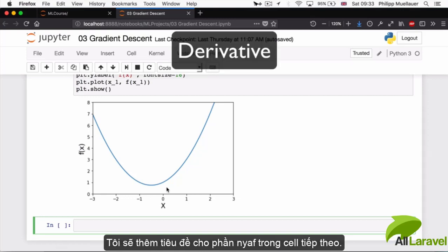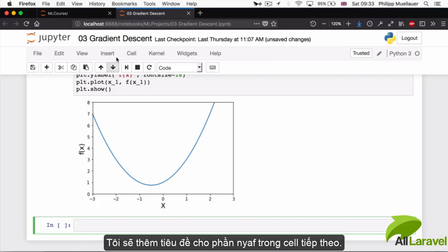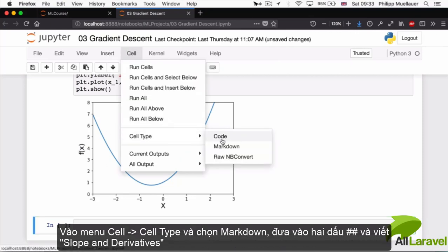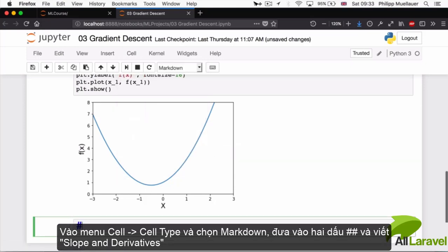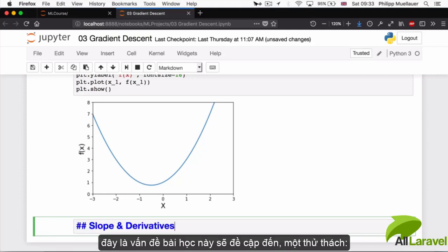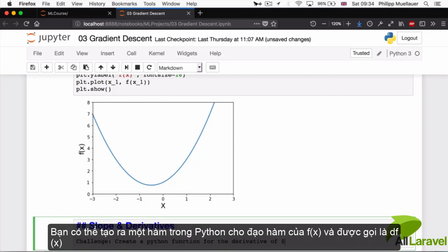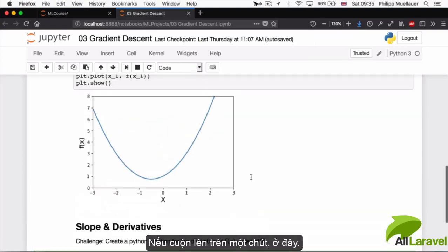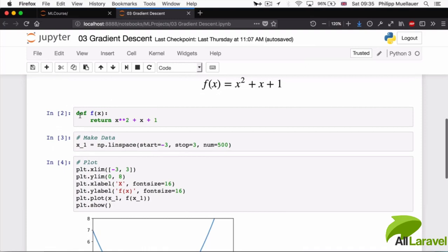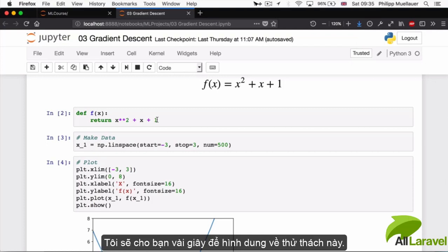So let's add this section heading down on the next cell. I'm going to go to cell, cell type, markdown, put two hashtags there, and then write slope and derivatives. Because this is what this lesson is going to be about. Now, as a challenge, can you create a Python function for the derivative of f of x and call that function df of x? I'm going to scroll back up for a second here. So remember, f of x was equal to x squared plus x plus 1. I'll give you a few seconds to figure this out.